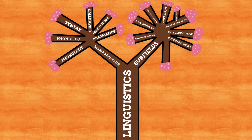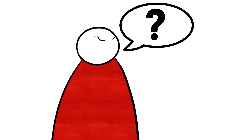Coming more into the modern world, we have applied linguistics — the area of language study where we look into how language can help solve real-life issues and problems. It's literally where we apply linguistics, hence the name. It seems to be deeply linked to sociolinguistics, but whereas that is more theory, applied linguistics is far more practical. We could use applied linguistics when a new word emerges into common usage which has become debated, and we need to figure out how and when that word should be used exactly.